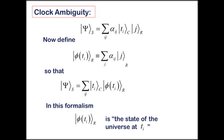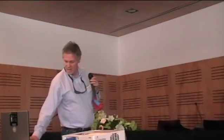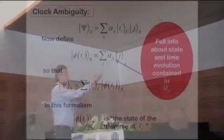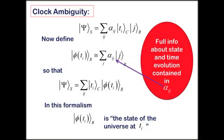And then, the time evolution is the state of the rest that's correlating with a particular time state. All the information about the state and the time evolution is carried in these expansion coefficients of the state in super space in this direct product space.